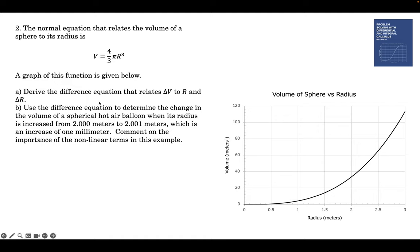Part B asks us to do that. We're blowing up a hot air balloon. When the radius increases from 2 to 2.001 meters, what's the change in volume? Okay, let's start with part A. The difference equation is this.